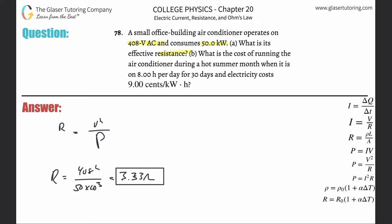Alright, now it says what is the cost of running the air conditioner during a hot summer month when it is on 8 hours per day for 30 days and electricity costs $0.09 per kilowatt hour? So total cost—we've developed this formula already—is going to be the cost per joule multiplied by the number of joules being used. Cost per joule: they gave us the cost per kilowatt hour. I don't like that, I'm going to convert that out.